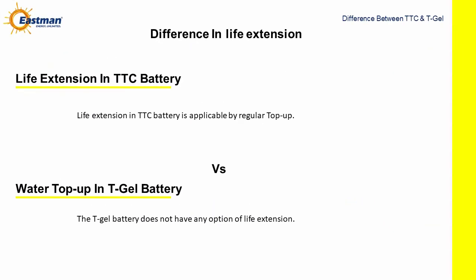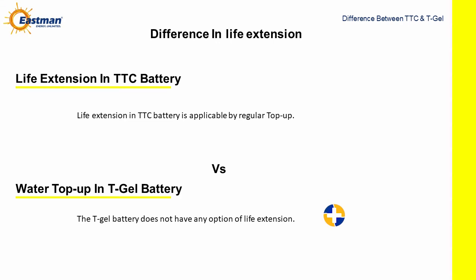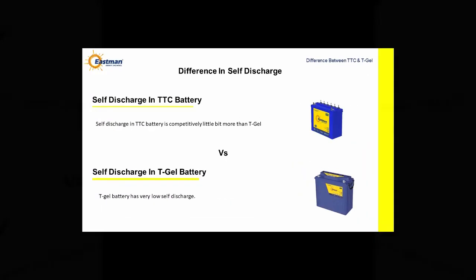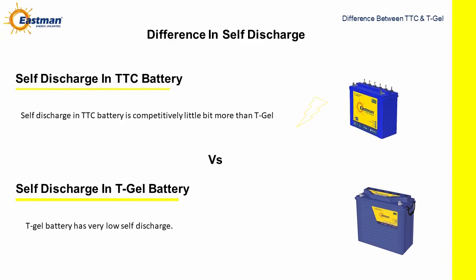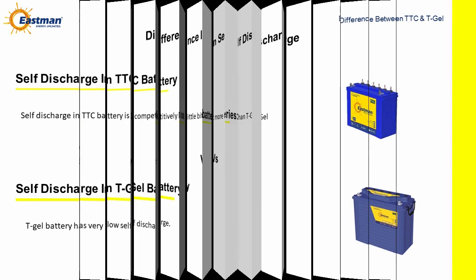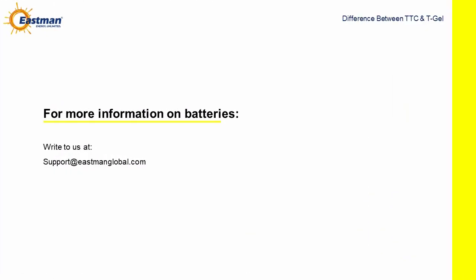Difference in life extension. Life extension in TTC battery is applicable by regular top up. The T-Gel battery does not have any option of life extension. Difference in self-discharge. Self-discharge in TTC battery is comparatively a little bit more than T-Gel. T-Gel battery has a very low self-discharge. For more information on batteries, write to us at support@eastmanglobal.com.